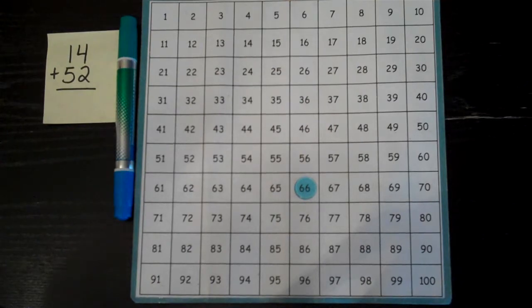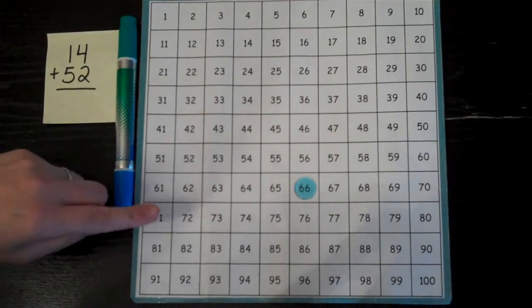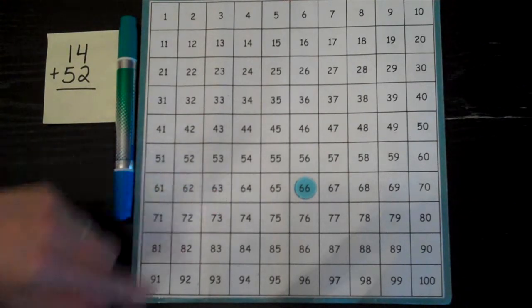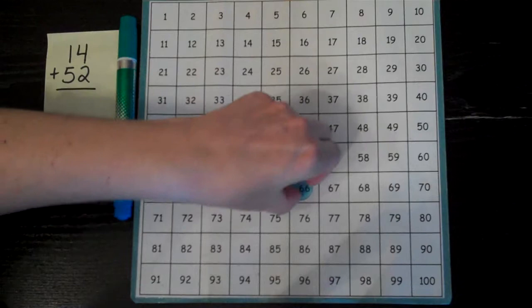That didn't take too long. Sometimes when we're adding bigger numbers though, there is a lot of counting, and there's a way to make it a little bit faster on the hundreds chart. When I add on the hundreds chart, I can go forward by ones, but I also can go down by tens.